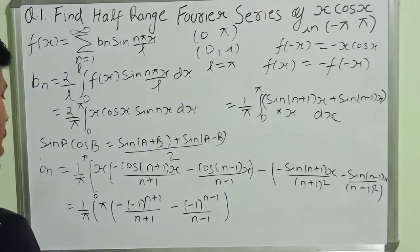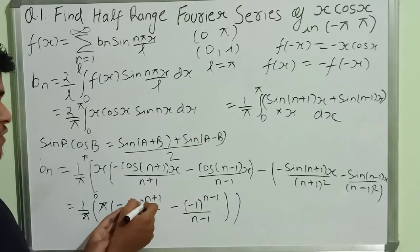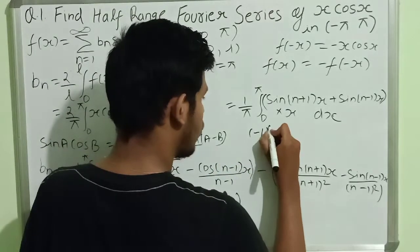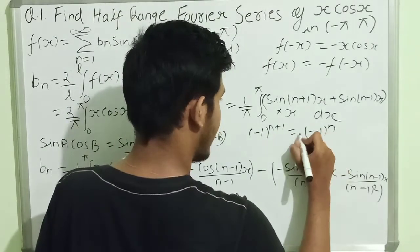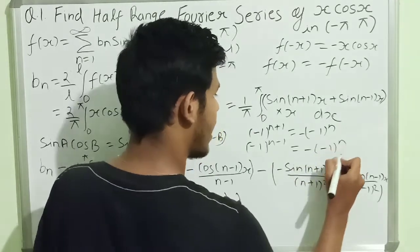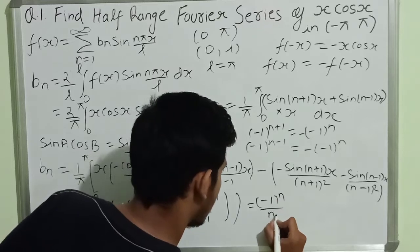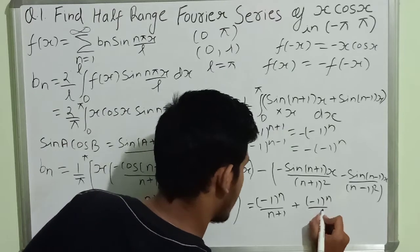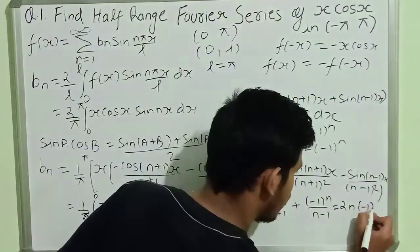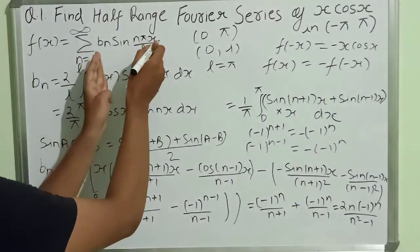Similarly, the second term gives minus(-1)^(n-1)/(n-1). After simplifying, minus(-1)^(n+1) becomes (-1)^n, and minus(-1)^(n-1) also becomes minus(-1)^n. After the π cancels, b_n becomes: (-1)^n/(n+1) plus (-1)^n/(n-1). Simplifying further gives: 2n(-1)^n / (n²-1).